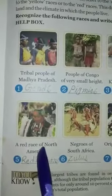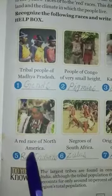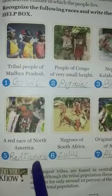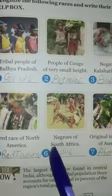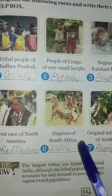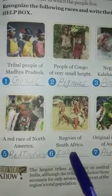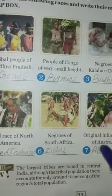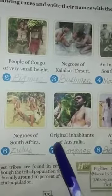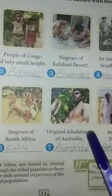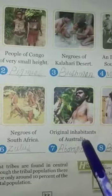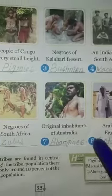Number 5, a Red race of South America, called Red Indians. Number 6, negros of South Africa, called Zulus. Number 7, original inhabitants of Australia, called Aborigines.